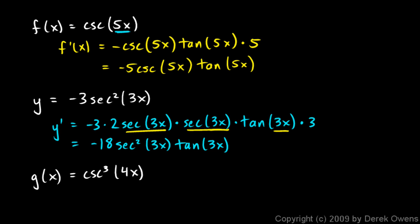Okay, the third one, g of x is the cosecant cubed of 4x. The derivative of the cosecant function is negative cosecant times the cotangent, but the cosecant function is really our inner function that is cubed, so we apply the power rule first here.